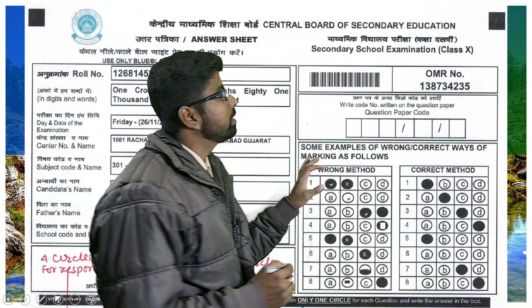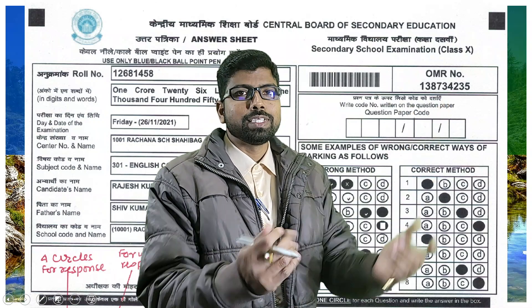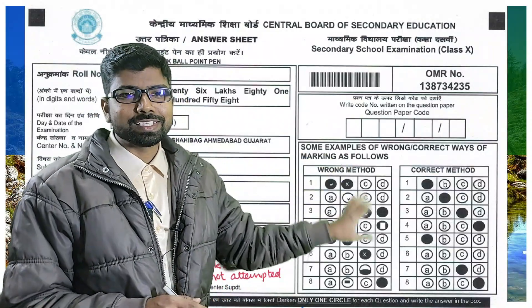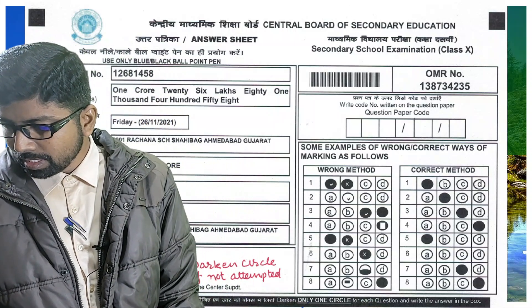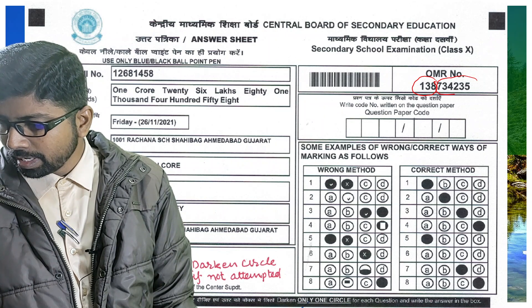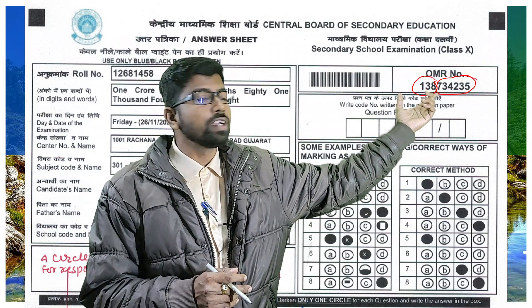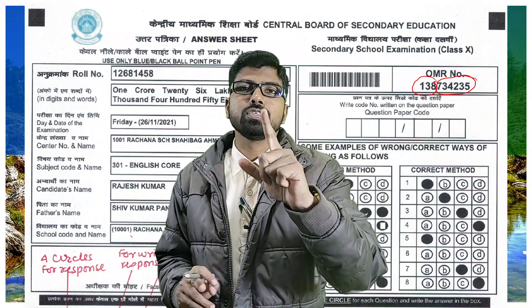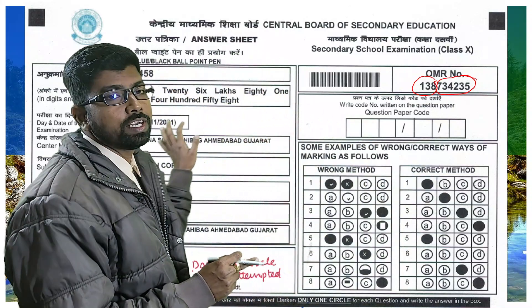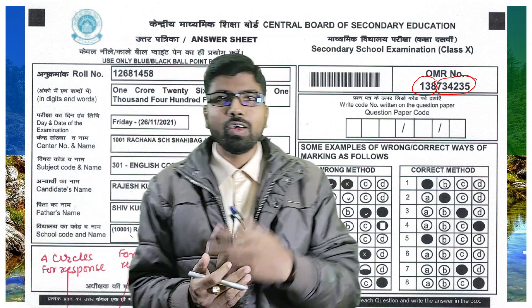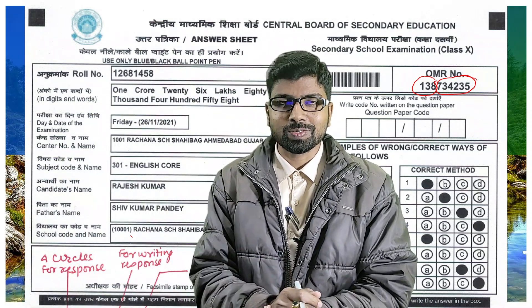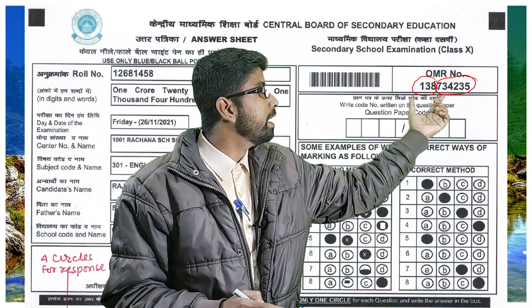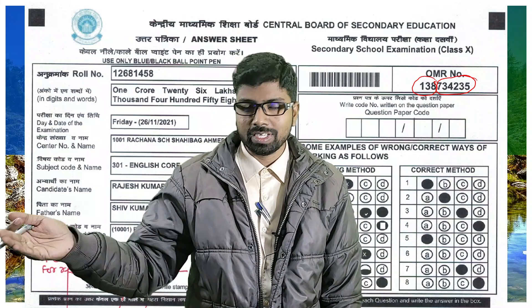One important thing: you can see the OMR number printed on the sheet. The first three digits of this OMR number represent the subject code, and the remaining digits are the roll number of the candidate. I have noticed this pattern across the last two or three examinations as deputy superintendent at my school. Of course, in the sample shown here the numbers appear different, but in actual sheets they will match accordingly.